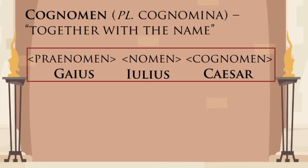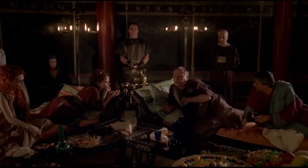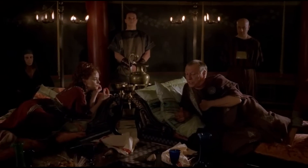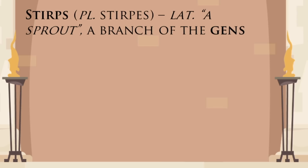The other uniquely Roman element of the full name was the cognomen. It was placed after the nomen. Cognomen started simply as a nickname, but later became a family name in its own right. As the gentes grew in size, praenomina were no longer sufficient to tell apart members of the same gens, so Romans started giving out nicknames. Those nicknames came from a variety of sources — they were often based on physical appearance or character trait, like Crassus, meaning fat, or Nasica, which means nosy.